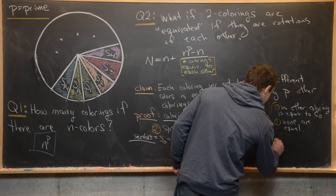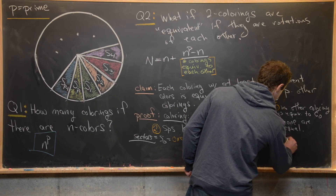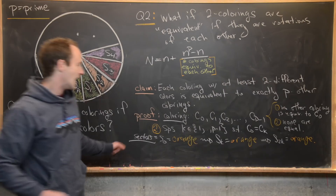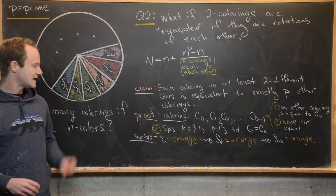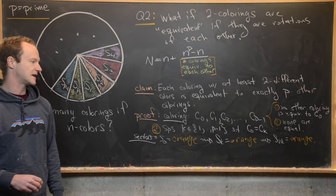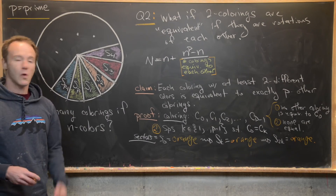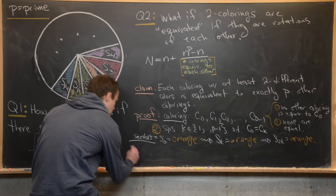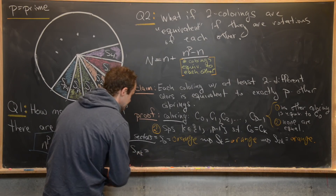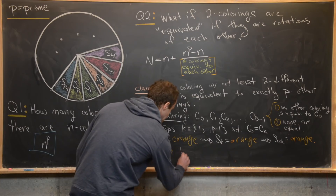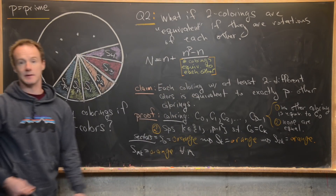Applying the rotation again, the sector at position 2K is also orange, and so on. Any multiple of K will give us an orange sector. So SmK is orange for all integers M.